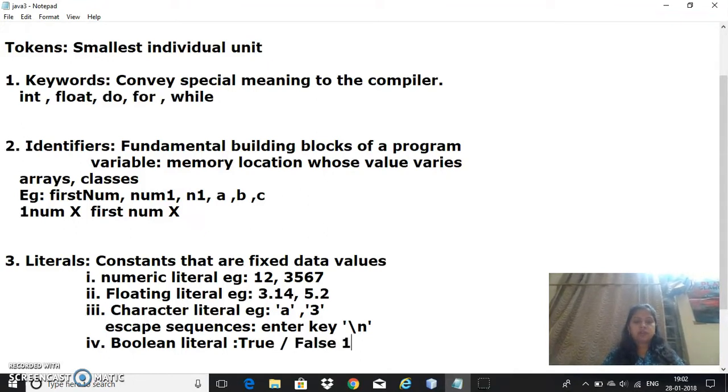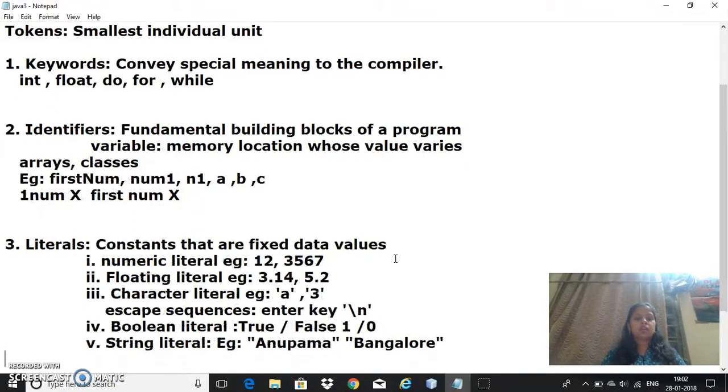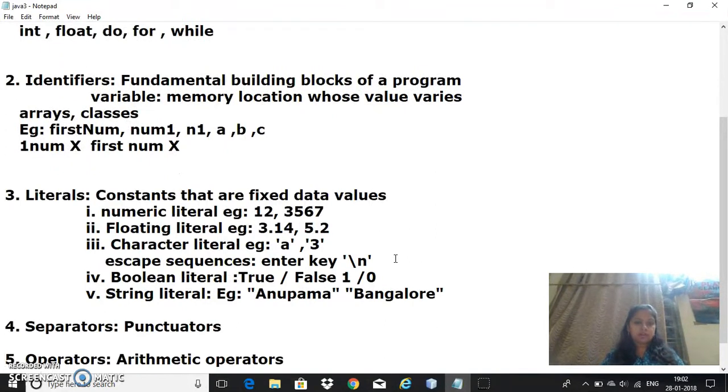The last one, fifth one, is string literal. In string literal, the text is given within double quotes. For example, if I want to display any string like 'Anupama' or some other text, I give the string literals like this. These are all the different types of literals: numeric, floating, character, boolean literal and string literals.